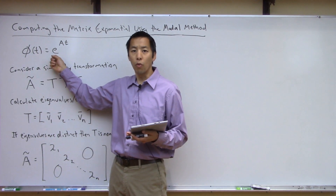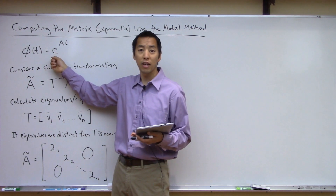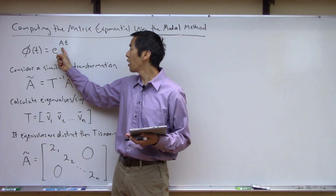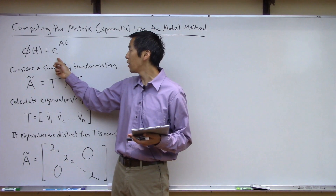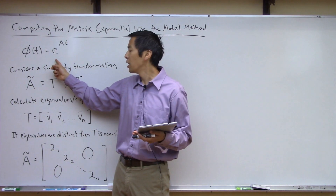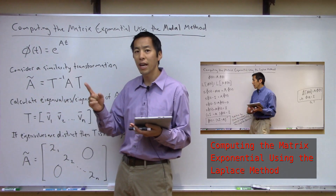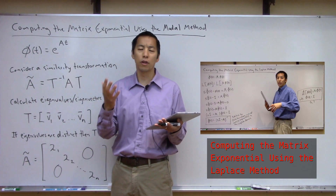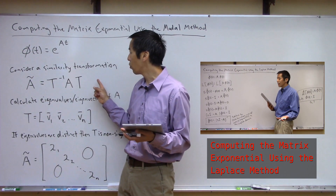Hopefully everyone knows what this is by now — we are looking to calculate this matrix exponential, where you have a square n-by-n A matrix and I need to calculate this state transition matrix, or matrix exponential. We already looked at different techniques like the Laplace technique. Today let's look at what I think is actually the most insightful and powerful way to do this — that's called the modal method.